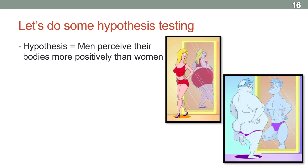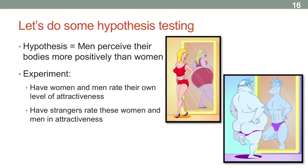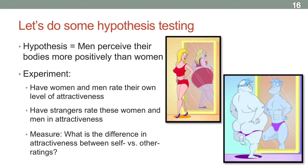Let's say we have the hypothesis that men tend to perceive their bodies more positively than women do. One way to test this is to do an experiment where men and women rate their own levels of attractiveness, but then you also have third-party people — strangers — also rate these same women and men in attractiveness. Your actual measure will be the difference in how attractive people see themselves versus how attractive other people see them.